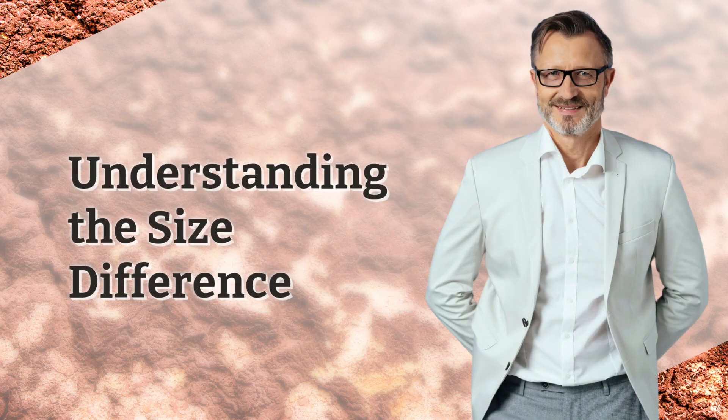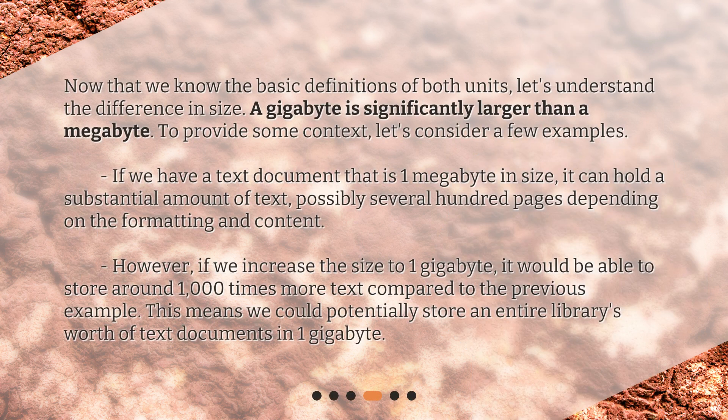Now that we know the basic definitions of both units, let's understand the difference in size. A gigabyte is significantly larger than a megabyte. To provide some context, let's consider a few examples. If we have a text document that is 1 megabyte in size, it can hold a substantial amount of text, possibly several hundred pages depending on the formatting and content. However, if we increase the size to 1 gigabyte, it would be able to store around 1,000 times more text, meaning we could potentially store an entire library's worth of text documents in 1 gigabyte.